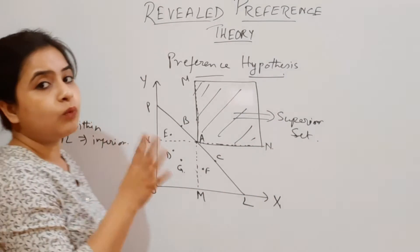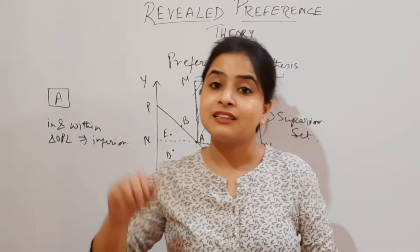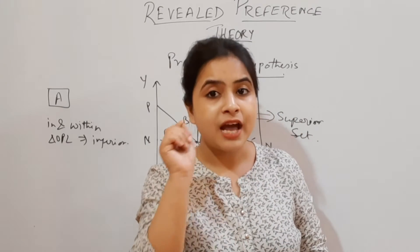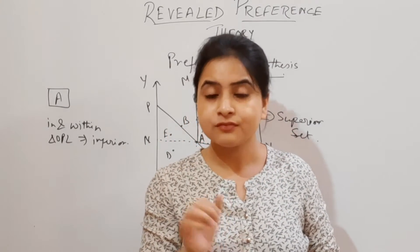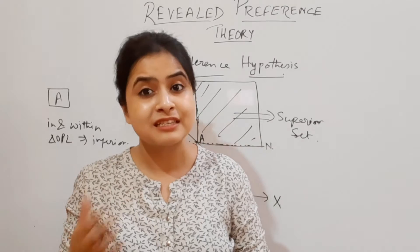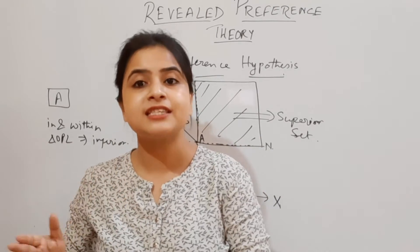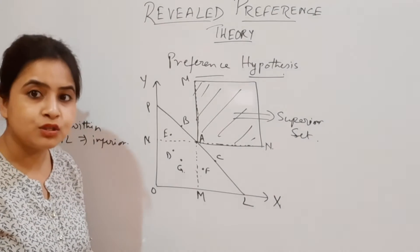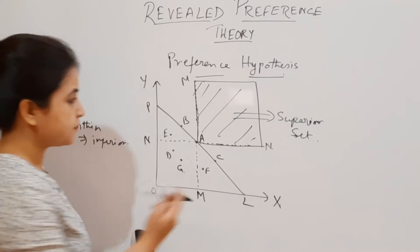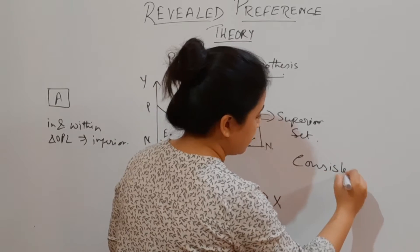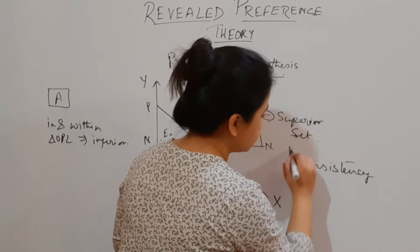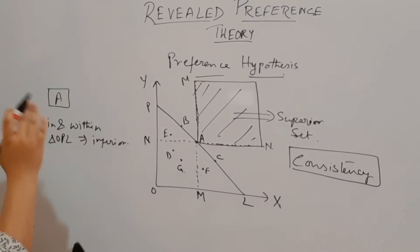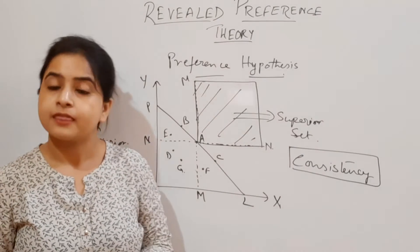One more important thing: in revealed preference theory, there is a basic assumption pointed out by J.R. Hicks — though Paul Samuelson did not explicitly discuss it. This is known as the postulate of consistency, which is a very important postulate in revealed preference theory.